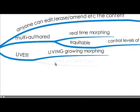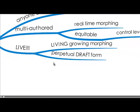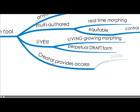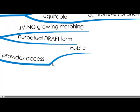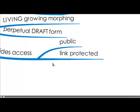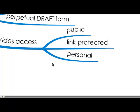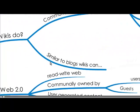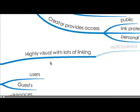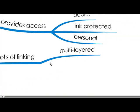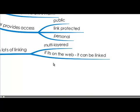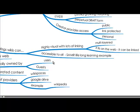It's live, growing, morphing, changing — it's a perpetual draft form. The creator who creates a wiki space decides the access granted: it can be public to anyone on the web, link-protected, or kept personal. It's similar to blogs in that it's highly visual with lots of thinking and linking, and it's multi-layered, meaning you can add lots of different media. It's accessible to all and a fantastic example of lifelong learning.